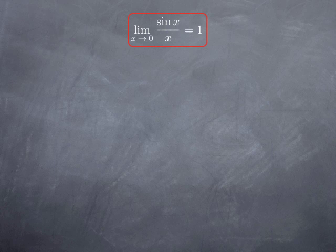Let's look at another example. We want to calculate the limit at 0 of cosine x minus 1 divided by x. This is an indeterminate form because cosine x at 0 approaches 1, so the numerator goes to 0 and so does the denominator. To use the limit sin x over x, we would need to transform the cosine into a sine, and one way to do that is to use the double angle formula.